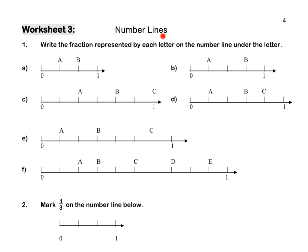Number lines: Write the fraction represented by each letter on the number line under the letter. A: from 0 to 1, I have divided the whole into 3 equal parts. Therefore, I'm working with thirds. A is 1 third and B is 2 thirds.